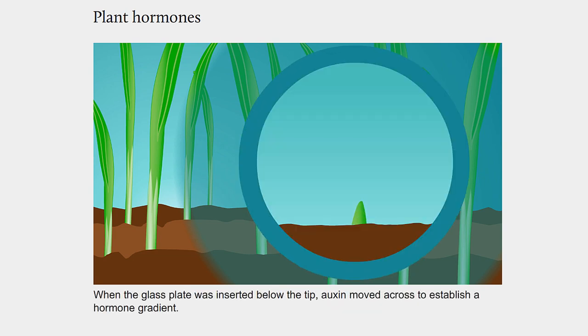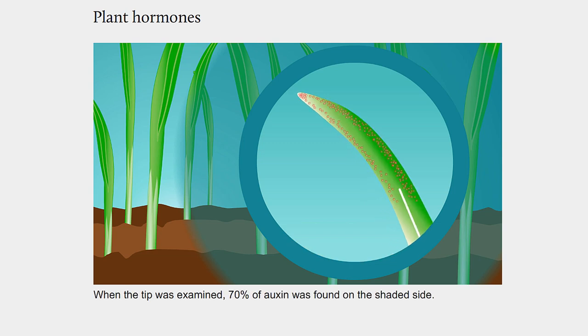When the glass plate was inserted below the tip, auxin moved across to establish a hormone gradient. When the tip was examined, 70% of auxin was found on the shaded side.